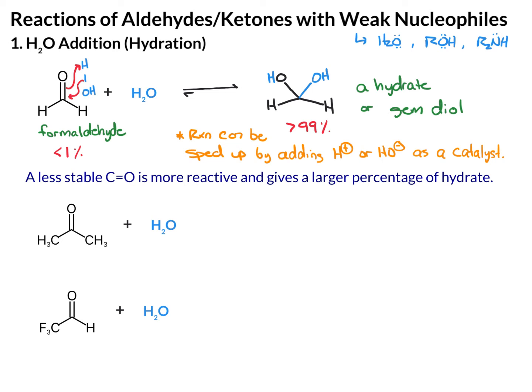Before we get into the mechanisms, I want to talk about the various carbonyl compounds and relative percentages of hydrate that form. The guiding principle is that a less stable carbonyl is more reactive and will give a larger percentage of hydrate, whereas a more stable carbonyl wants to stay as is and won't give a very high percentage of hydrate.